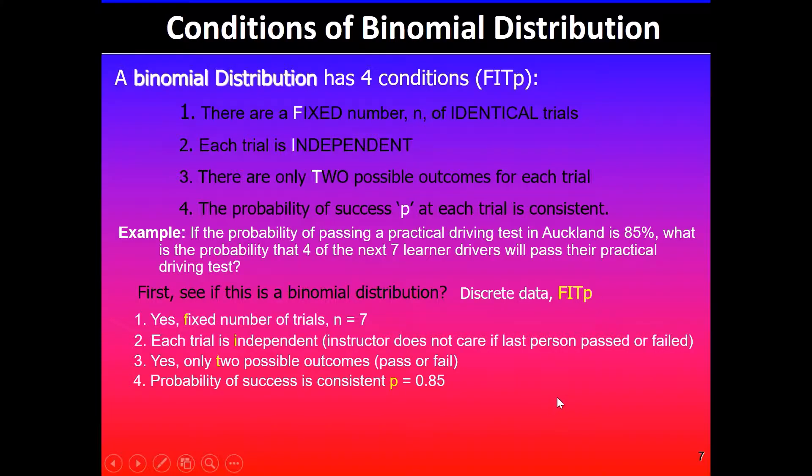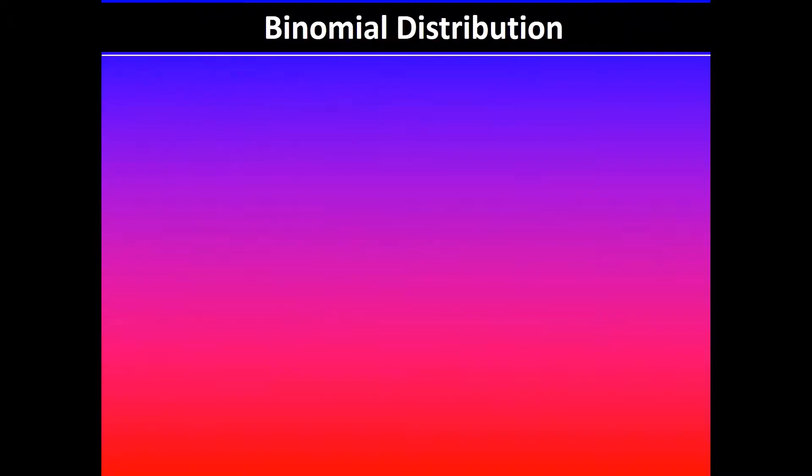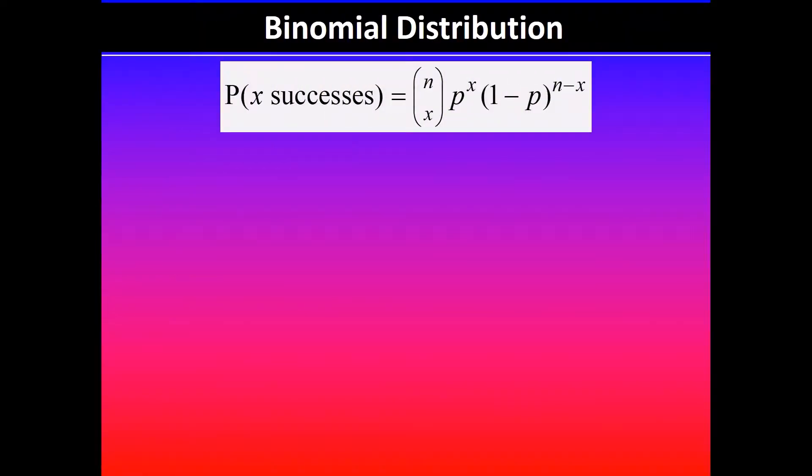We can go ahead and use the binomial distribution formula. Using this formula we can now substitute. The parameters given: n is equal to 7, which is the number of trials; x is equal to 4, we want four of the next seven drivers to pass; and the probability is 0.85, 85% success rate.